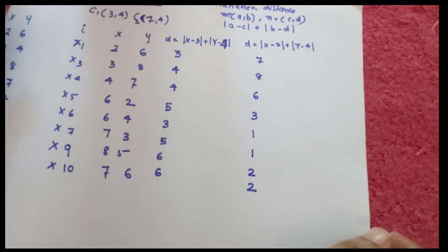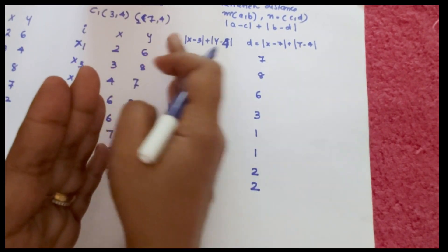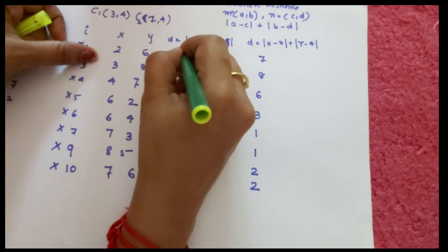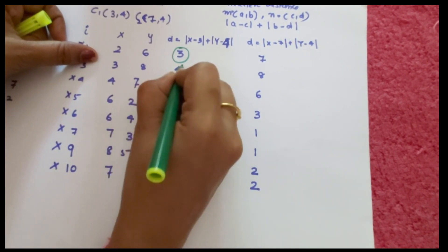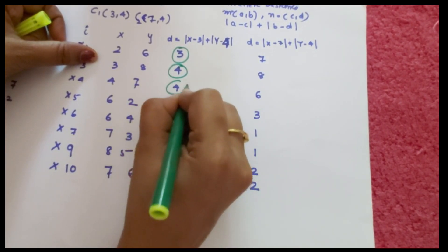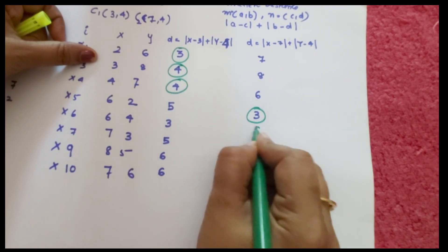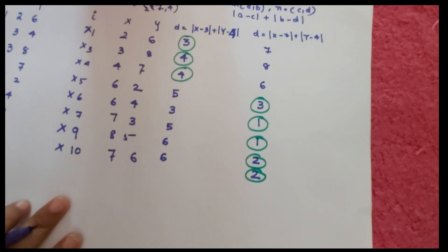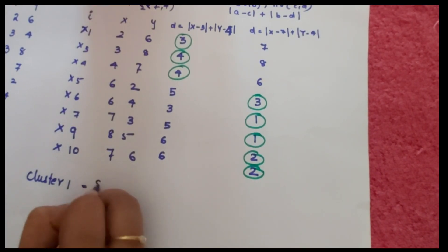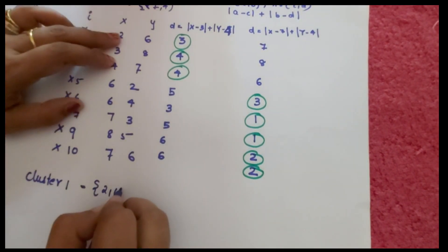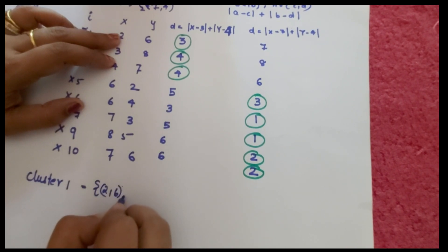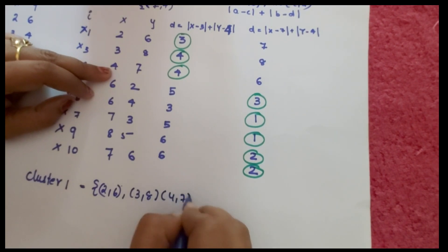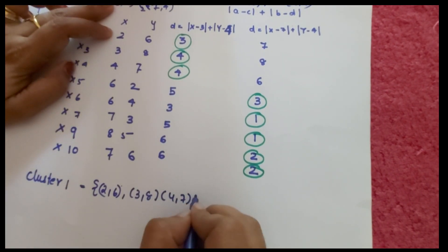Comparing the distances to each medoid, we assign each point to the nearest medoid. Points with smaller distance to (3,4) go to Cluster 1: (2,6), (3,8), (4,7), and medoid (3,4) itself. Points with smaller distance to (7,4) go to Cluster 2: (7,4) medoid, (6,2), (6,4), (7,3), (8,5), (7,6).